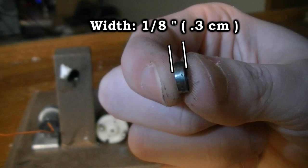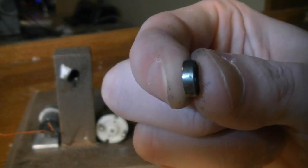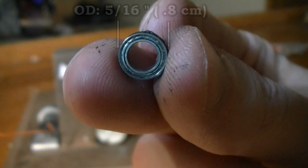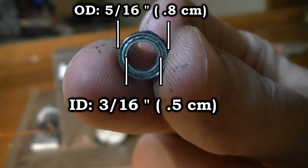These bearings are about an eighth of an inch thick and have an outer diameter of 5 sixteenths. The inner diameter is 3 sixteenths of an inch.